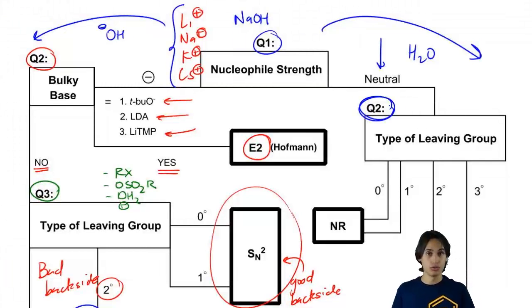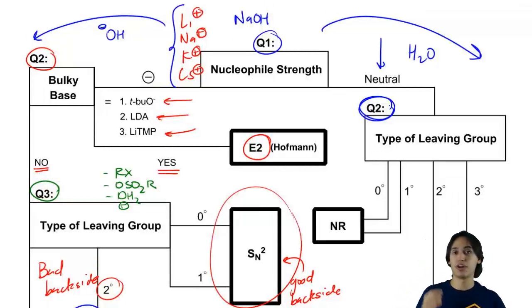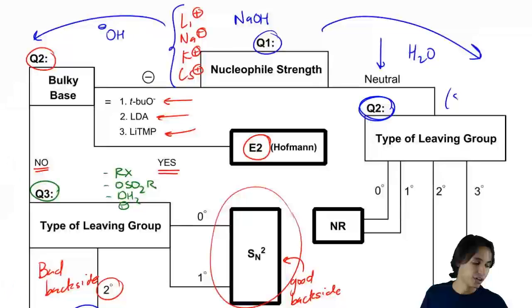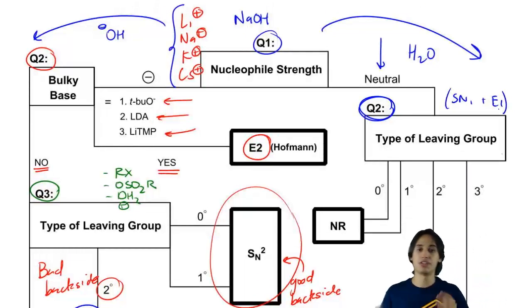Because if this is a neutral, then that's going to prefer what kind of mechanisms? That's going to prefer mechanisms that aren't bimolecular, that don't have the nucleophile attacking at the beginning. So this is going to favor SN1 and E1 mechanisms. Because it's going to be waiting around for a carbocation to be generated.